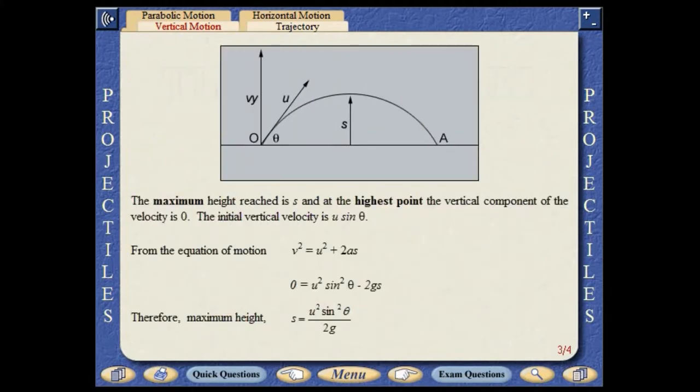Knowing that when the body reaches its maximum height, the vertical component of the velocity is zero allows us to calculate the value of the maximum height reached.